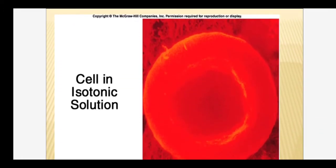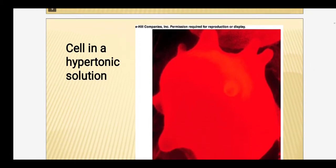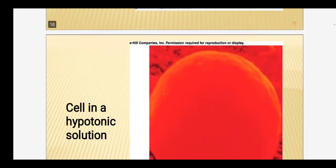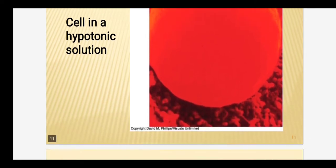When RBCs are kept in an isotonic solution, the cells will not alter in size or shape — they remain alike. Whereas when they are kept in hypertonic solution, the RBCs shrink in size. When they are kept in hypotonic solution, the cells swell in size. This is the importance of giving isotonic fluid to a patient.